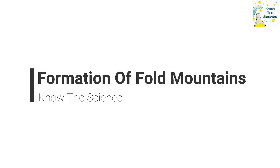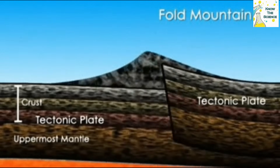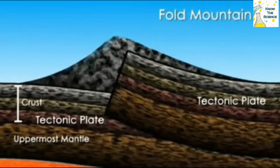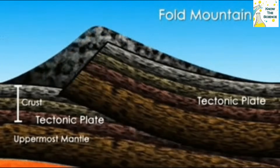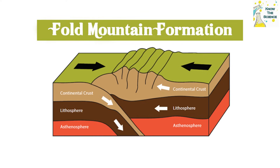Formation of fold mountains. Like all mountains, fold-type mountains are created in areas where tectonic plates meet. These areas are known as convergent plate boundaries. Because these are areas where two plates come together, there is often a great deal of friction or pressure that builds up along the plate edges as they shift and move against one another.